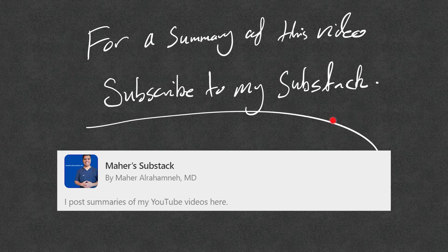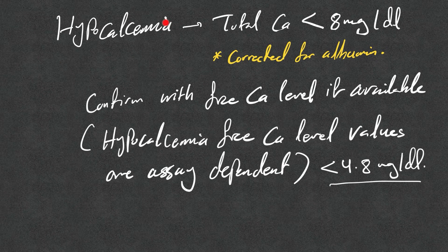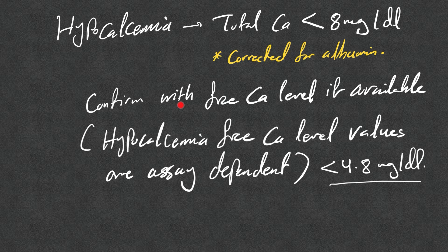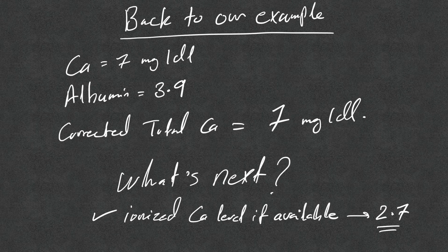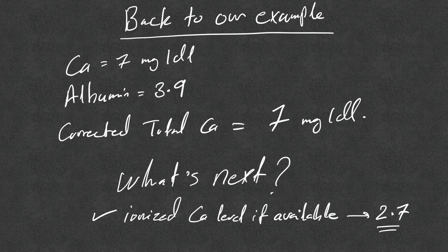Hypocalcemia is defined by total calcium less than 8 mg per deciliter after correction for albumin. Confirm with free calcium level if available; free calcium values for hypocalcemia are assay-dependent — some labs use less than 4.8 mg per deciliter, others may differ. Back to our example: calcium was 7 mg/dL, albumin was 3.9, so the corrected total calcium was 7 mg/dL since normal albumin is 4. Next, we check ionized calcium — for this patient it was 2.7.